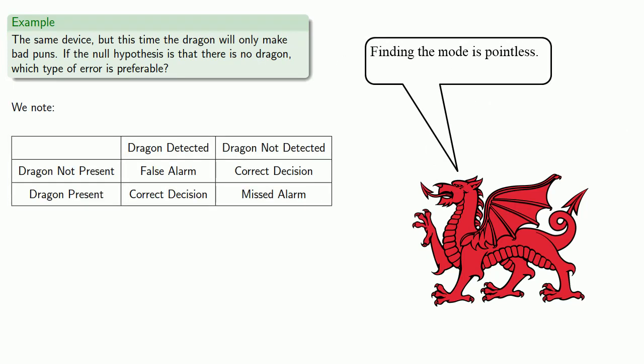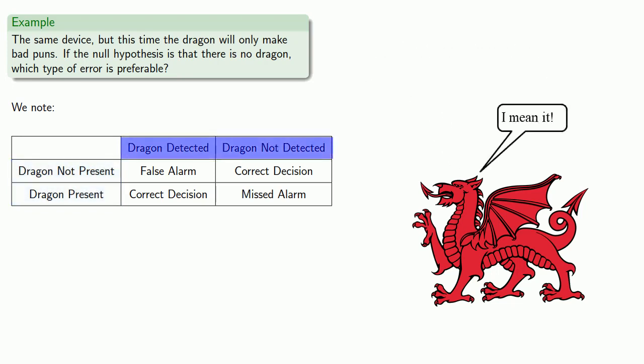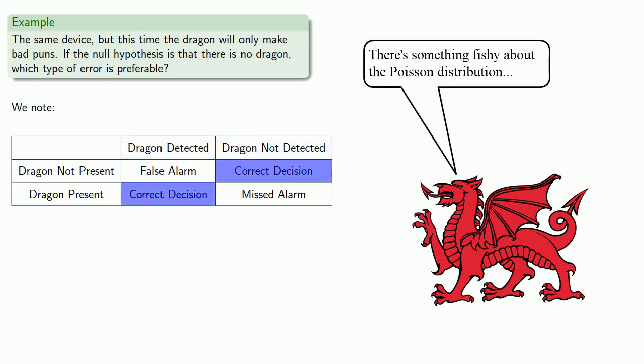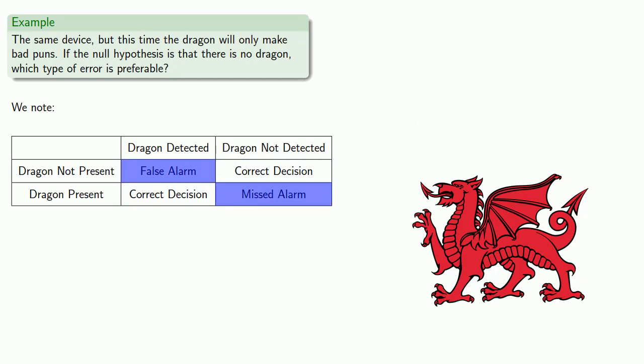Either a dragon is present or not, and either the alarm detects a dragon or it doesn't. We have our correct decisions, we have a false alarm, and we have a missed alarm. But now let's consider the consequences.